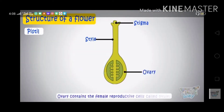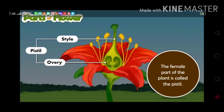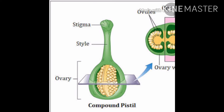Pistil is the female part of a flower. It consists of three parts: stigma, style and ovary. Stigma is the topmost part or receptive tip, often sticky, which receives pollen grains. Style is the long tube-like slender stalk that connects the stigma and the ovary. The ovary holds many ovules — it is the part of the plant where seed formation takes place.